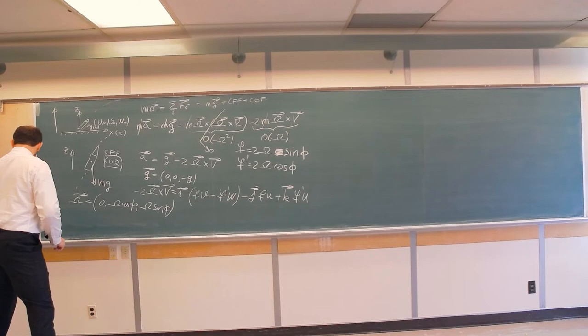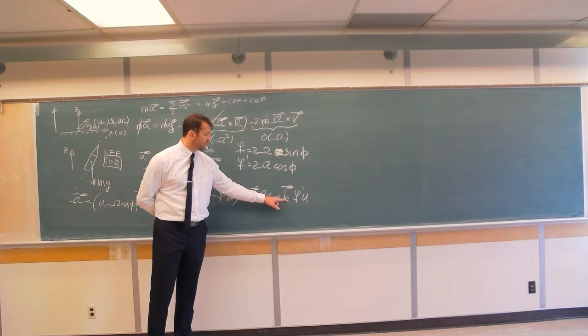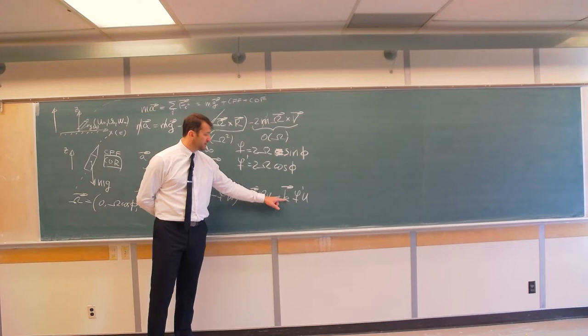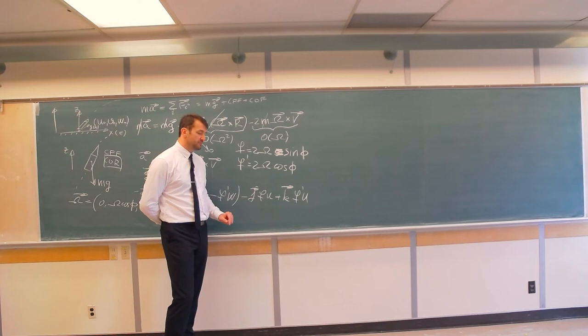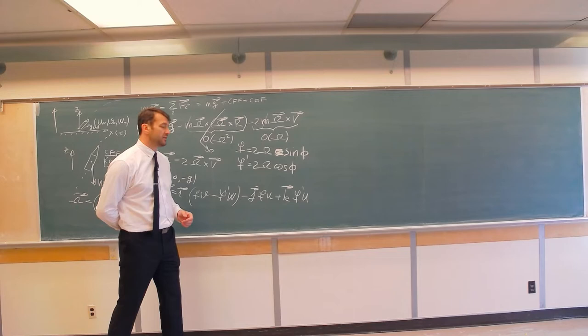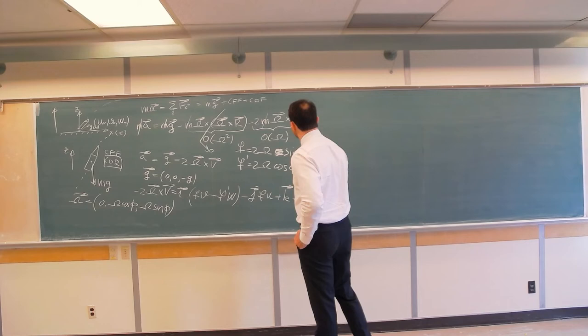These are the components of the Coriolis acceleration in the zonal, meridional, and vertical directions, with these substitutions, where U is zonal wind component positive eastward, V is meridional wind component positive northward, and W is vertical missile component positive upward. Now, when we know the components of these two vectors, we can write this vector equation as three scalar equations.